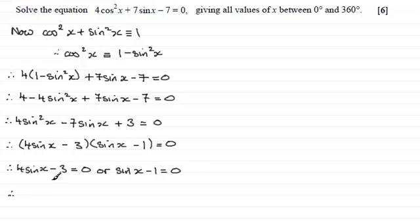So if we take this equation, add 3 to both sides, 4 sine x would equal 3. Divide by 4, and you end up with sine x equals 3 quarters. Or for this one, if we add 1 to both sides, we end up with sine x equals 1.